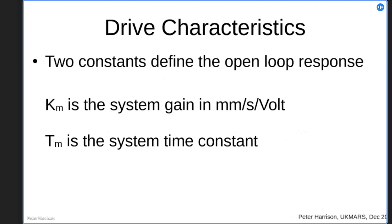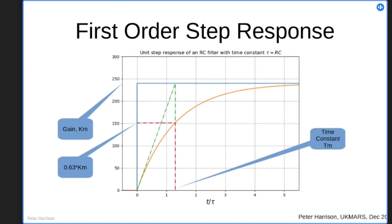One is the overall gain. So if you put one volt in, how many millimeters per second do you get out of it, or how many revs per minute. And the other is the system time constant, which is how long it takes to get to some fraction of the final value. These are very common kinds of systems. Something which is more intuitive perhaps is maybe applying currents to a heating element for a soldering iron or a hot plate.